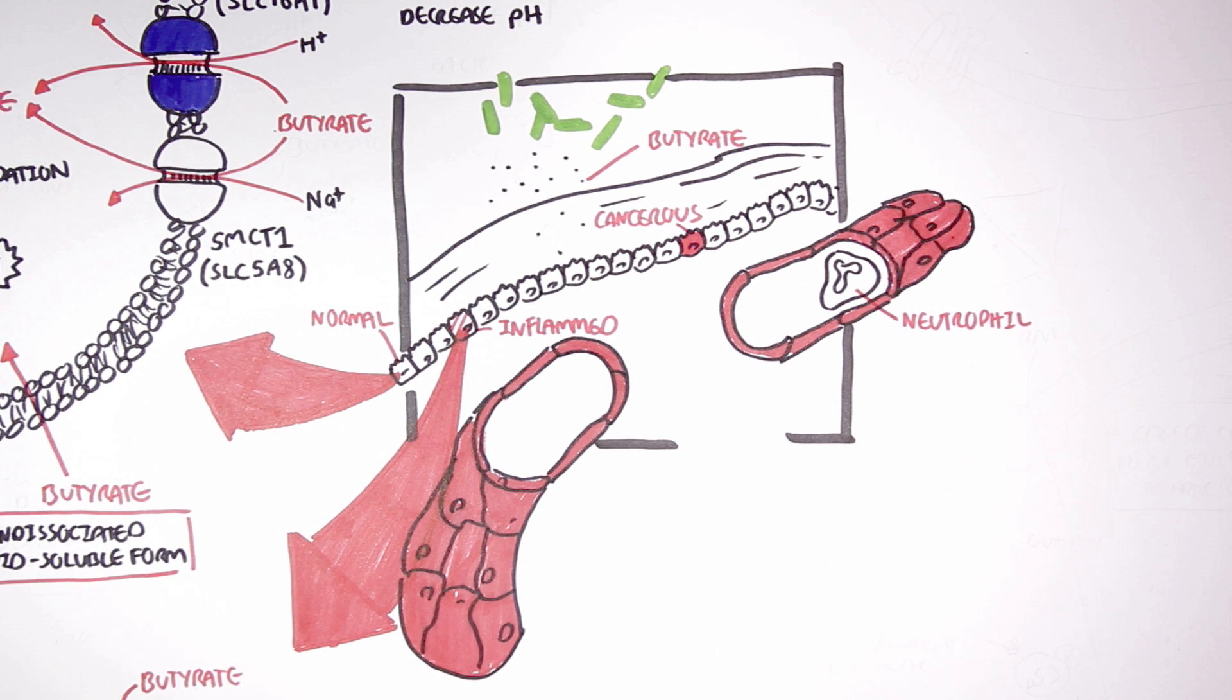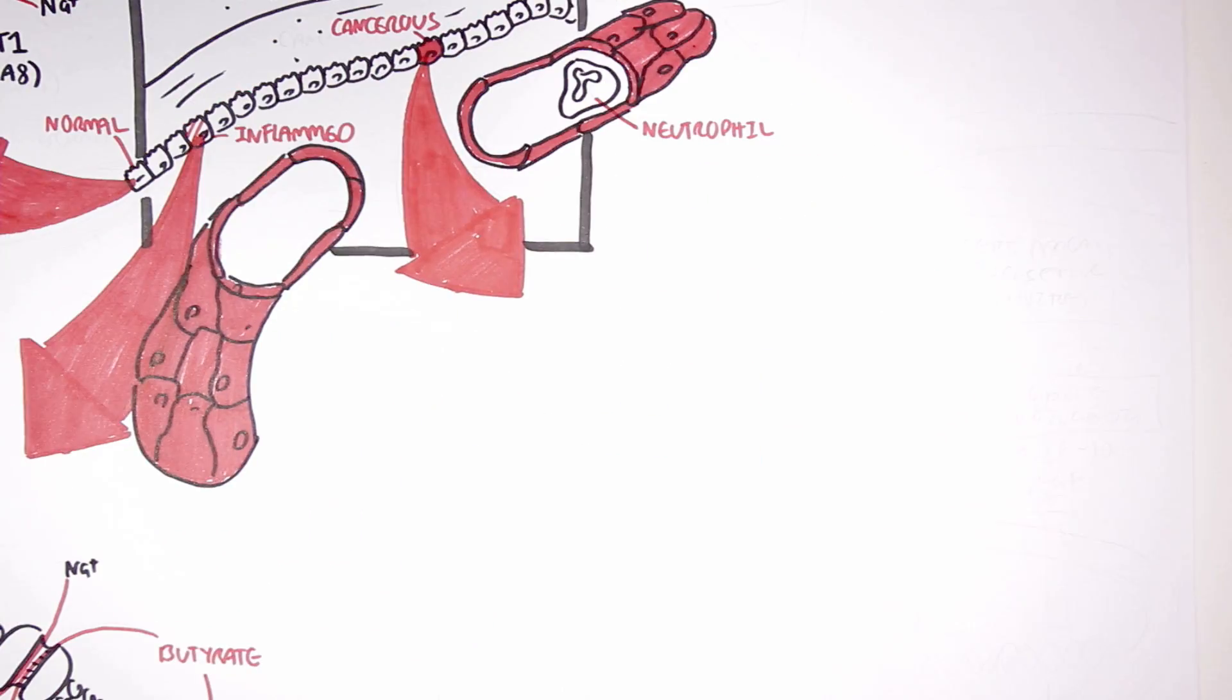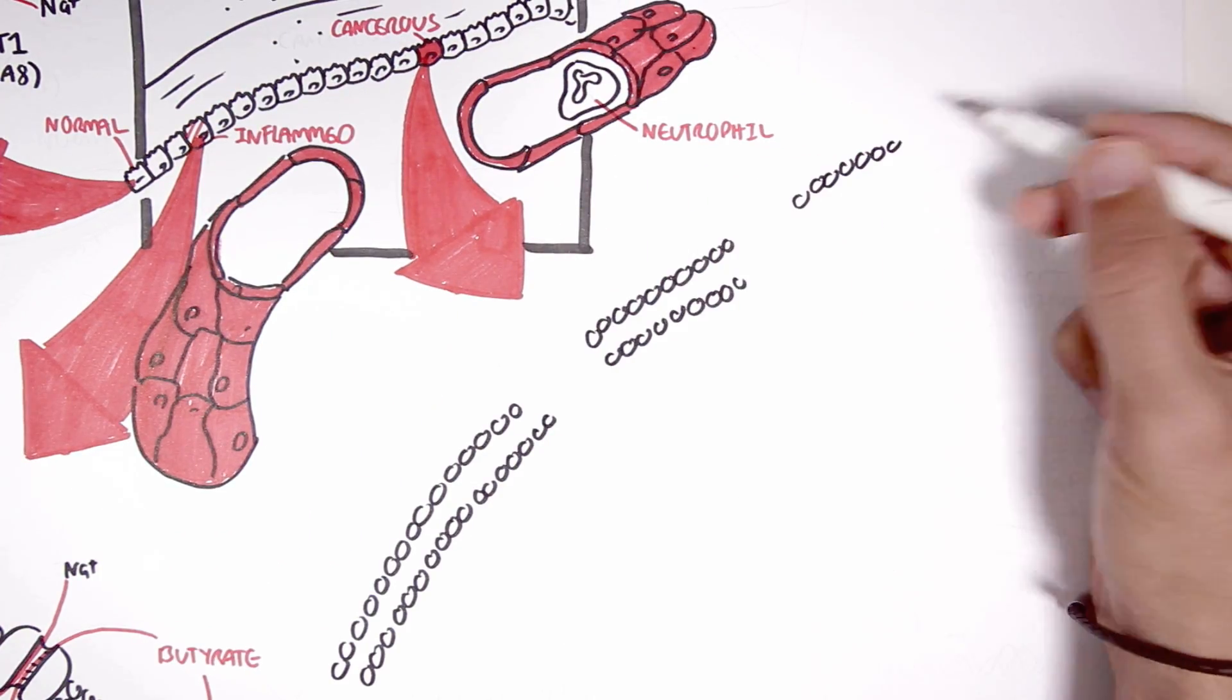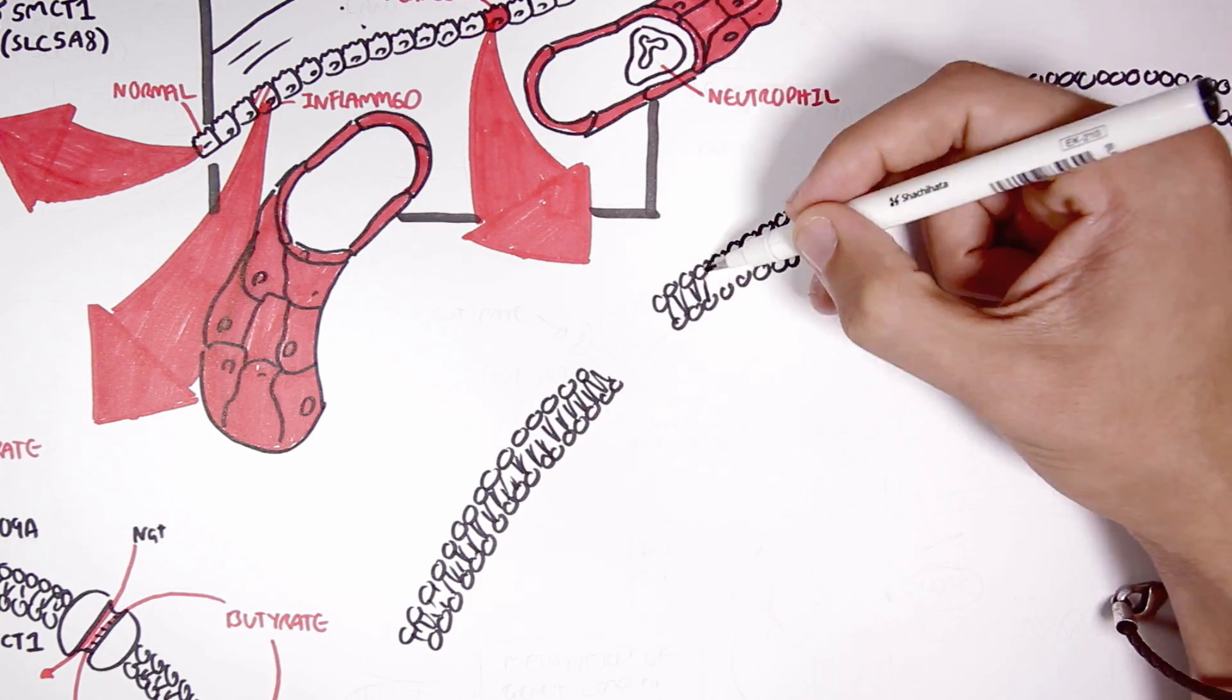Let us move on. One of the proposed beneficial effects of butyrate on the human colon health is the effect butyrate has on colon carcinogenesis. Butyrate has shown to prevent and inhibit colon carcinogenesis. So here I'm drawing a colon cancer cell.